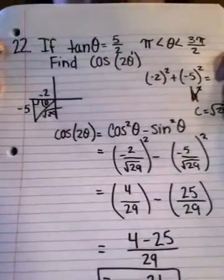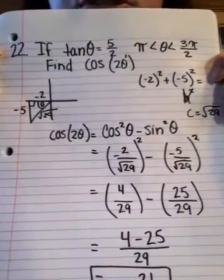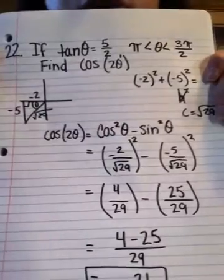Okay, number 22. If the tangent of theta equals 5 over 2, find the double angle of the cosine.